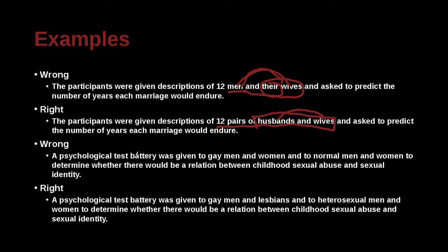The psychological test battery was given to gay men and women, and to normal men and women, to determine whether there would be a relation between childhood sexual abuse and sexual identity. The correct sentence is: the psychological test battery was given to gay men and lesbians, and to heterosexual men and women. So what we've done here is just made the terminology equivalent.